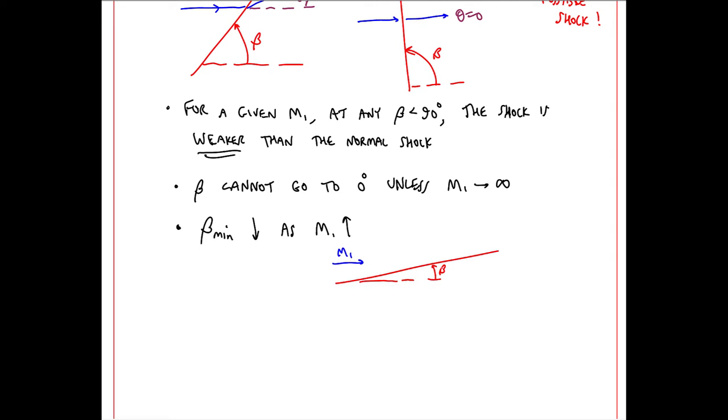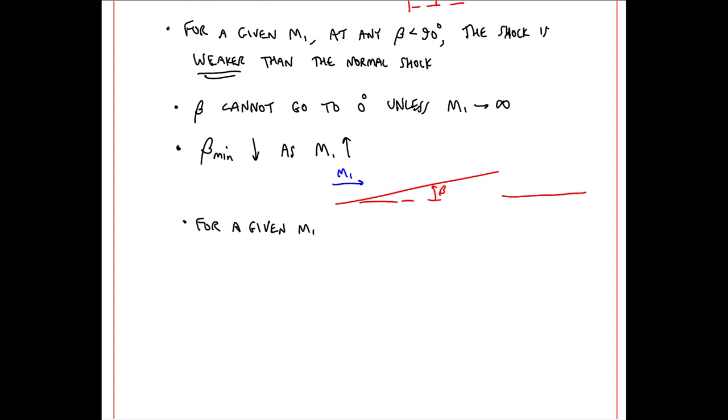What does beta equal 0 even mean? As beta gets smaller and smaller, the shock gets shallower and shallower, and at M equal infinity, the shock theoretically becomes parallel to the flow, which of course is impossible, but this is a theoretical limit.